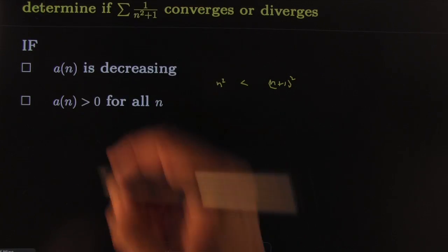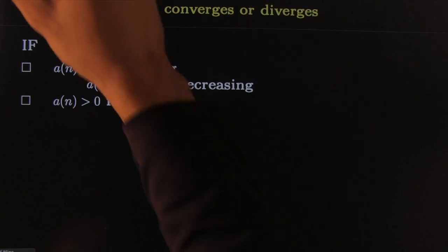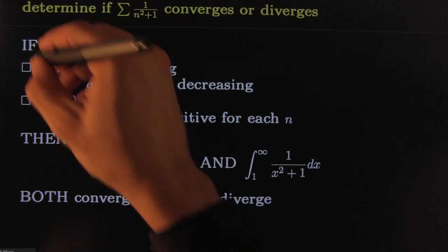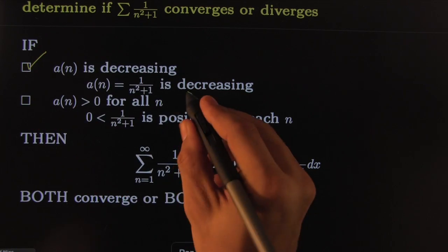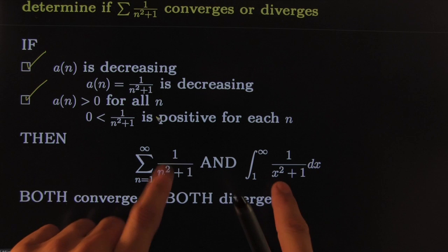That's all we need. When we check these two things - when we check that it's decreasing and we check that it's positive - the minute you check these two items, that guarantees that they both behave the same.